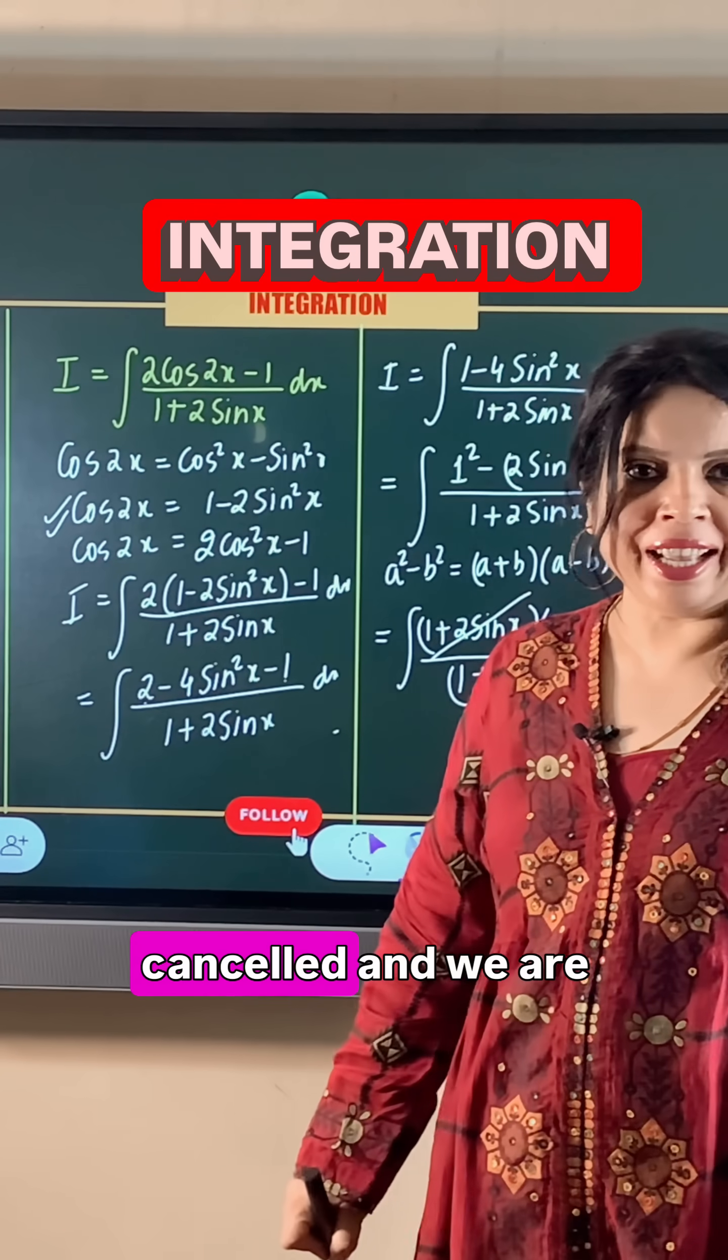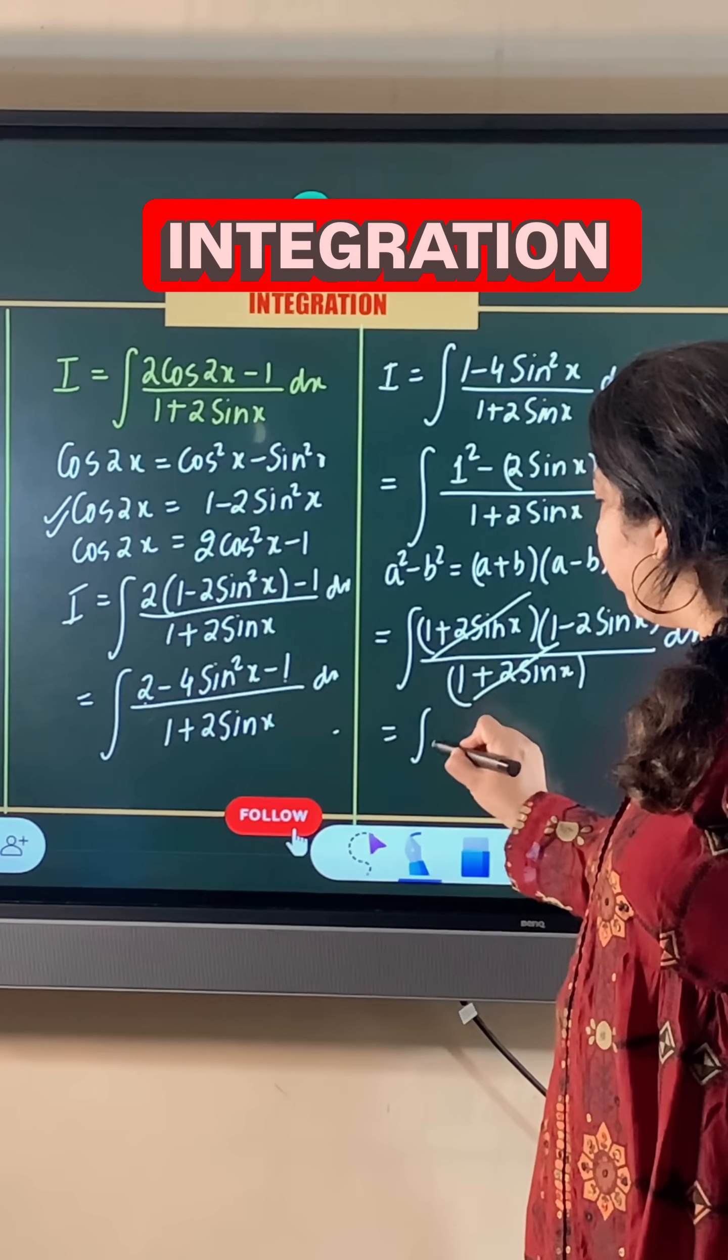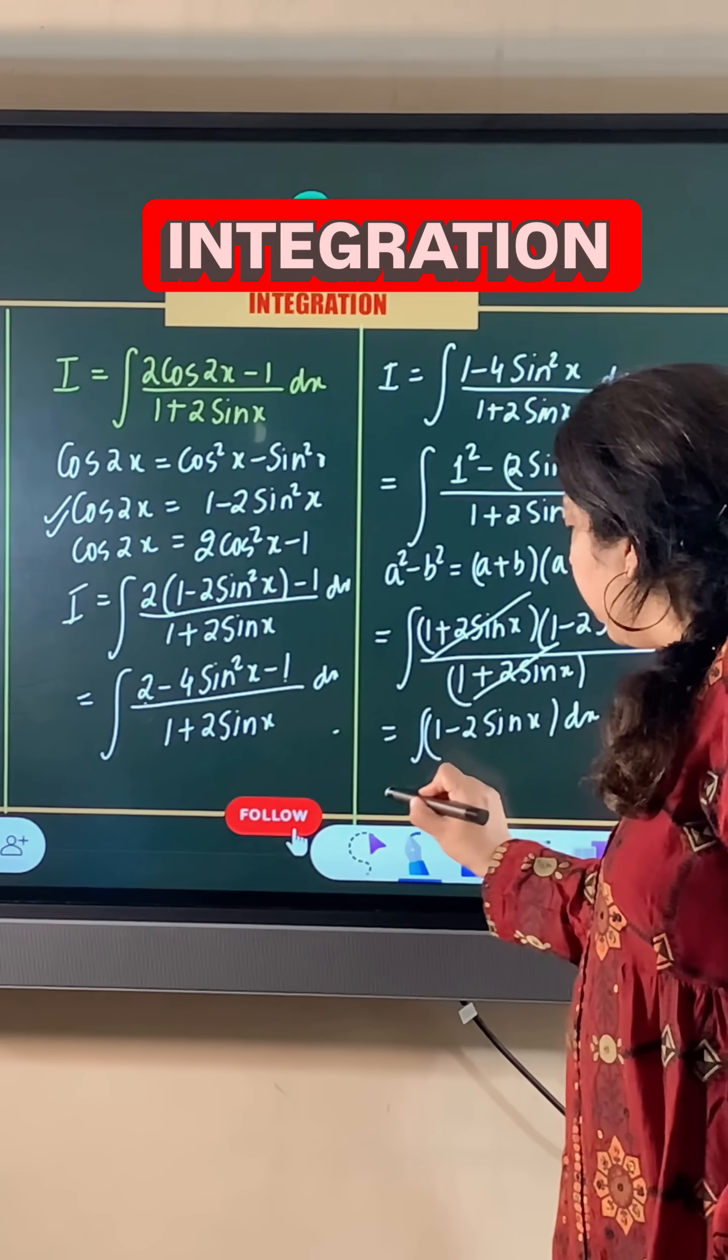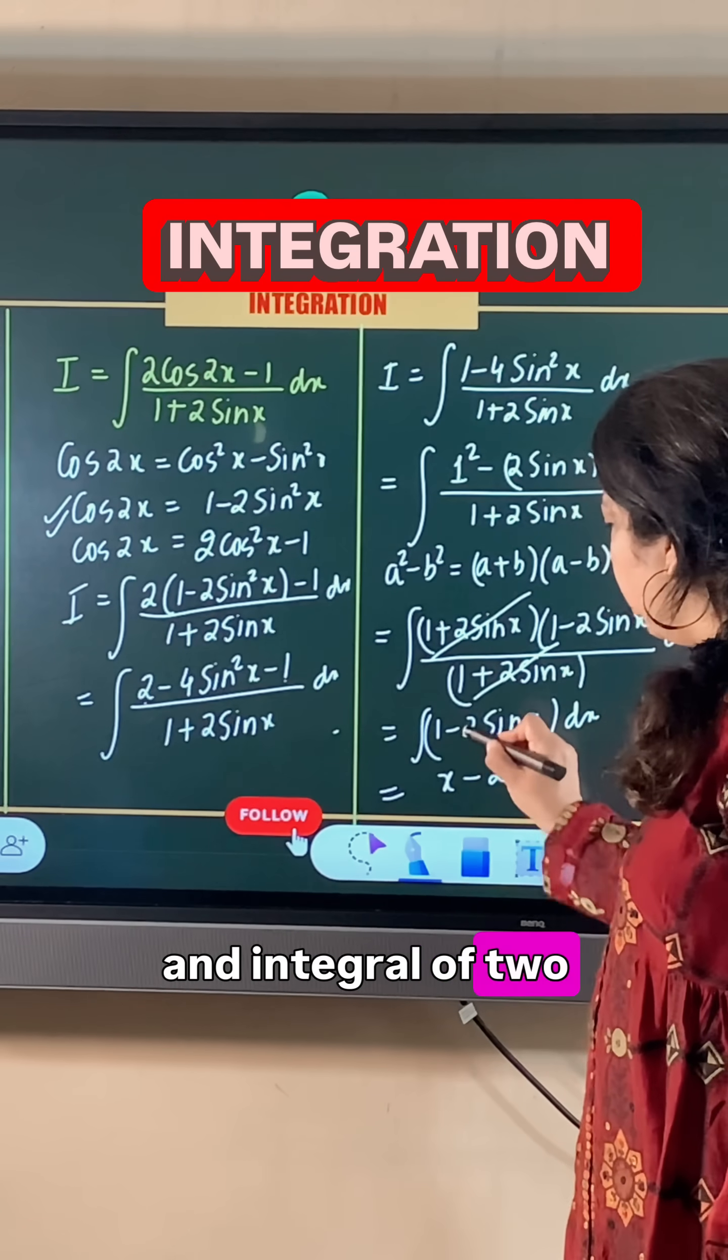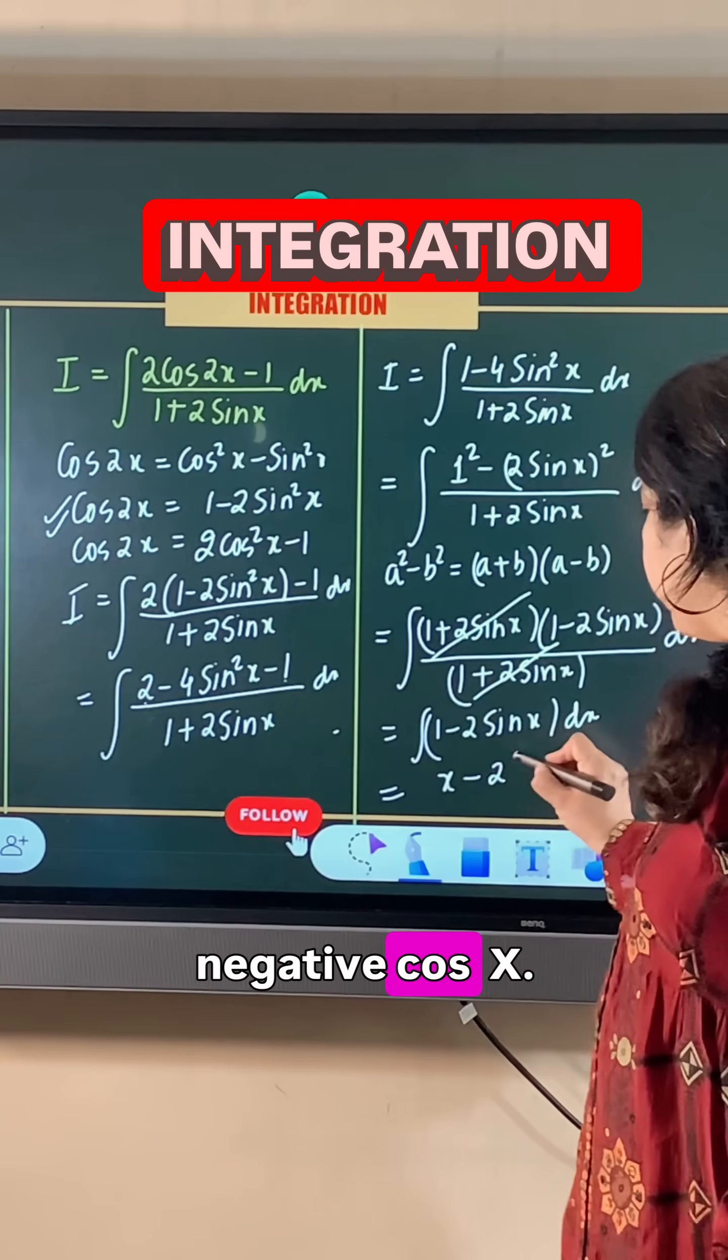These terms cancel, leaving us with ∫(1 - 2sinx)dx. The integral of 1 is x, and the integral of sinx is -cosx, so we get x - 2(-cosx).